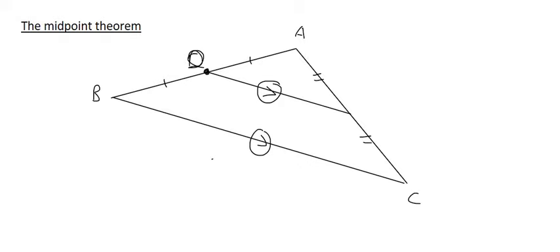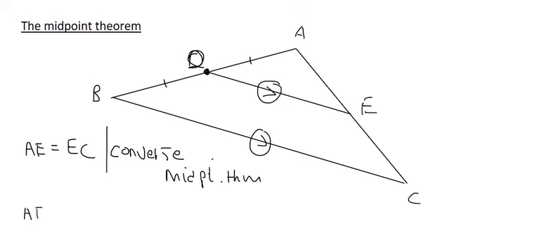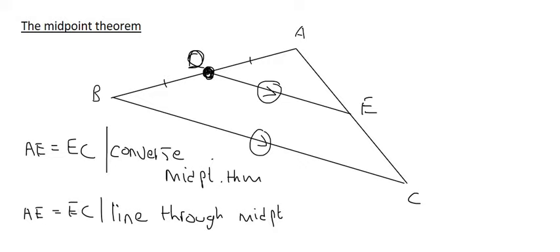The reason for this conclusion is not called the midpoint theorem. In a test, you would say AE is equal to EC, but you wouldn't use midpoint theorem as the reason because the midpoint theorem only applies when you already have two midpoints. Some teachers use the word 'converse,' meaning the opposite of the midpoint theorem. Others say the reason is: a line through a midpoint parallel to the other side. Check what your teacher uses.